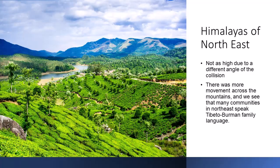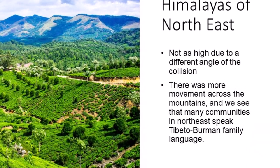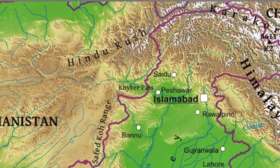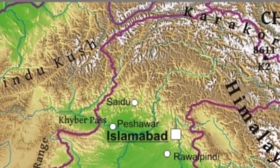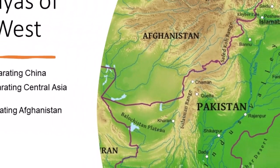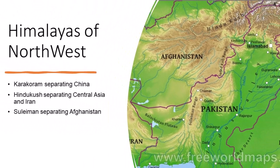The Himalayas in the northeastern part are not as high due to a different angle of the collision, so there was more movement across the mountains, and we see that many communities in the north-east speak Tibeto-Burman family languages. On the north-west corner, the impact of the plates created another rugged range including the Karakoram, Hindu Kush in the north-west, and Sulaiman to the west, respectively separating China, Afghanistan, Central Asia and Iran from Pakistan and India.